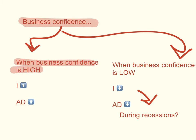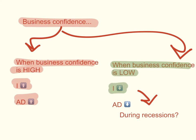The second factor is business confidence. When business confidence is high, firms have high expectations and see an overall increase in economic activity, so they tend to invest more. Investment spending increases, aggregate demand increases, and the curve shifts to the right. The opposite is true: when business confidence is low, investment spending decreases and aggregate demand decreases. This often happens during recessions, when businesses tend to invest much less.